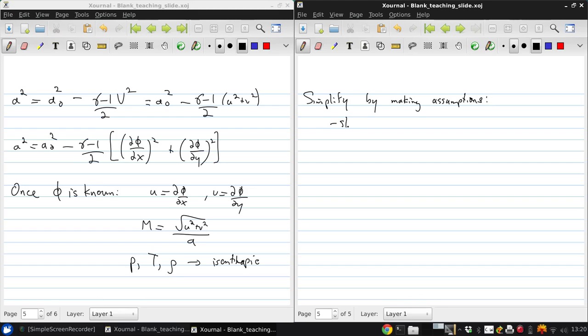The two key assumptions we're going to make are that our bodies are slender, that is, they're much longer than they are tall, and that we're only interested in small angles of attack.